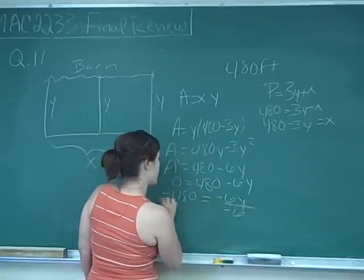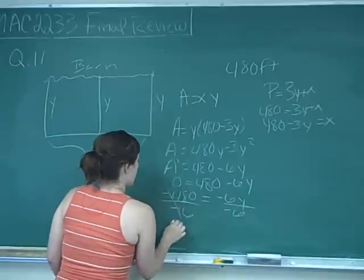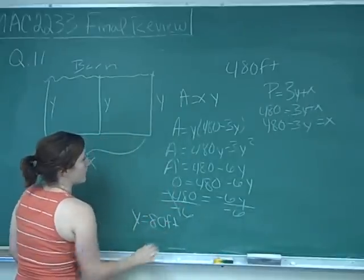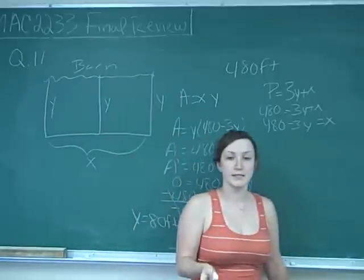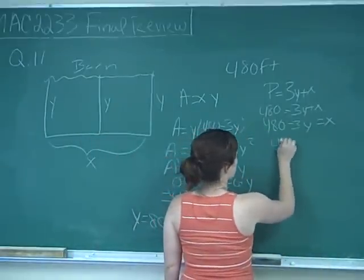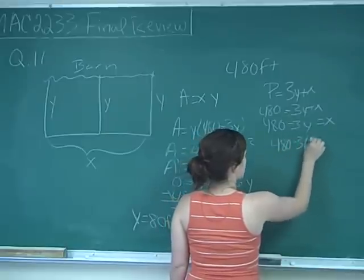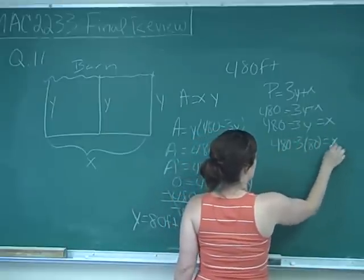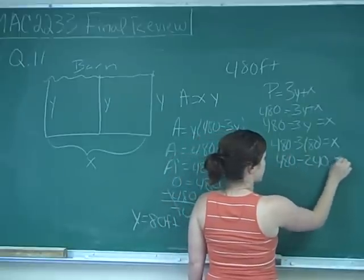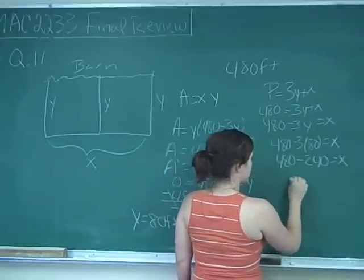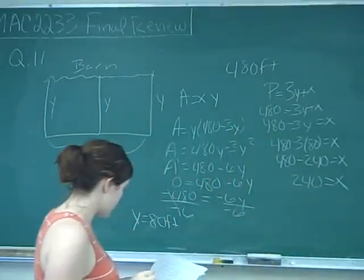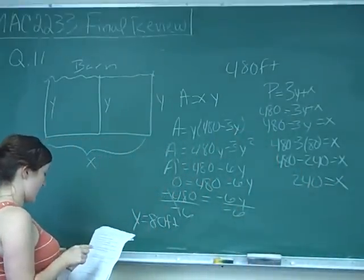Dividing by negative 6, we get y equals 80 feet. Now we need to find x, so we go back and plug y equals 80 in: x equals 480 minus 3 times 80. That's 480 minus 240, which gives x equals 240.